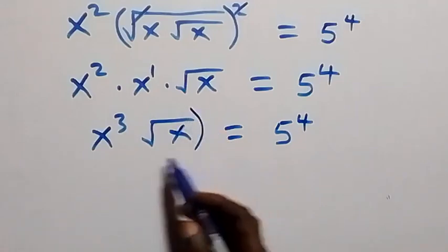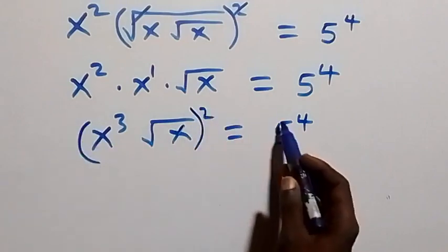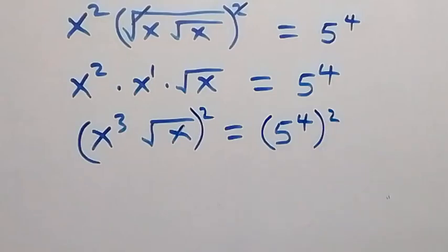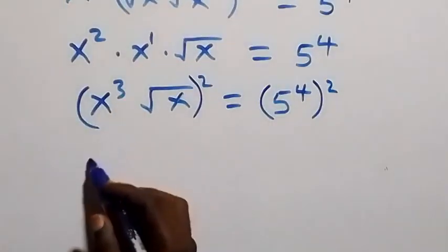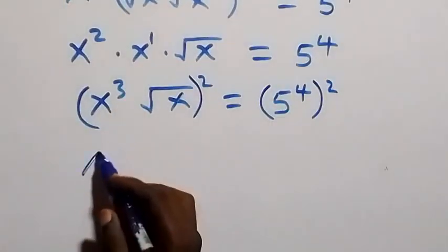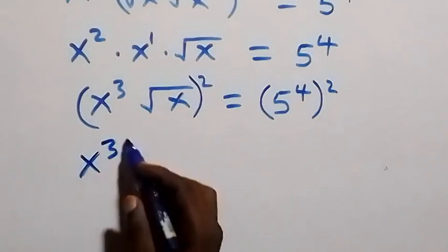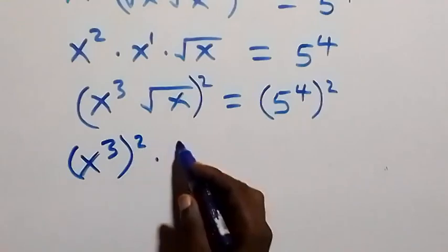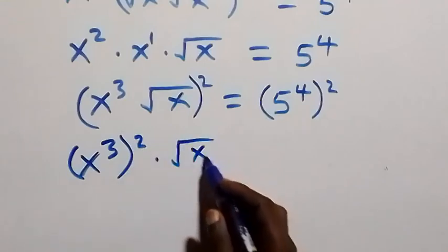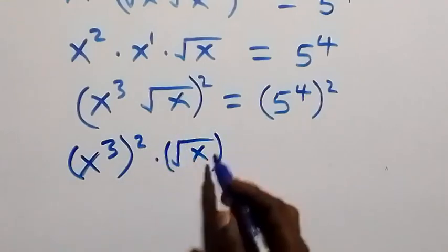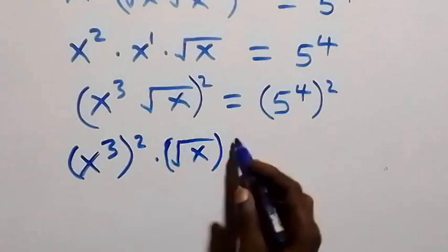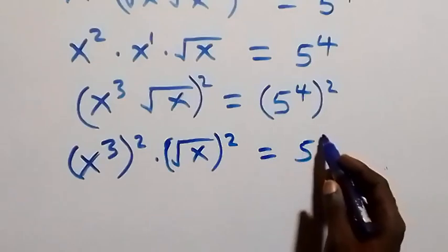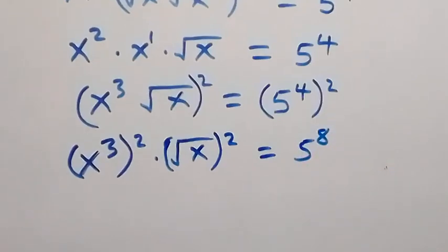We square this side and also square this side. This square will affect x raised to power 3, so we have x raised to power 3 squared, then times root x also squared, now equals to 5 raised to power 8.